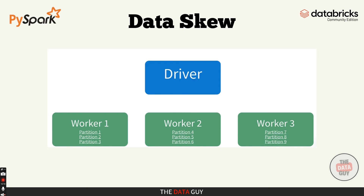Now that we've talked about broadcast joins, let's dive into another important performance issue in Spark: data skew. Data skew happens when your data is not evenly distributed across partitions — in other words, some partitions have way more data than others. This imbalance can lead to certain partitions taking much longer to process than others, causing the entire Spark job to slow down. Let's explore what data skew is, why it's a problem, and how to deal with it.